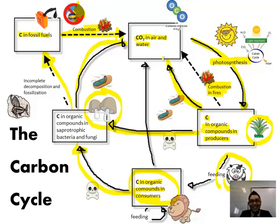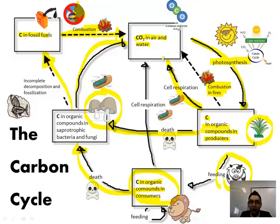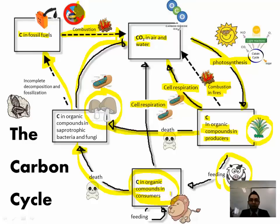What else do we have? Feeding — when animals are eating each other, that's putting carbon into other organisms. Death. Cell respiration — let's talk about that quickly. All living things do cell respiration. I'm doing cell respiration right now: I have some glucose, I'm breathing in oxygen, it's being converted in my cells' mitochondria, I'm making energy for myself, and I'm exhaling carbon dioxide. The carbon dioxide gets returned back to the air.